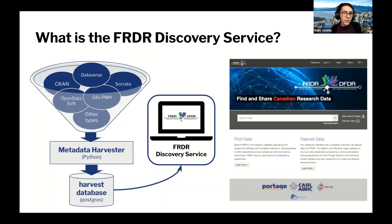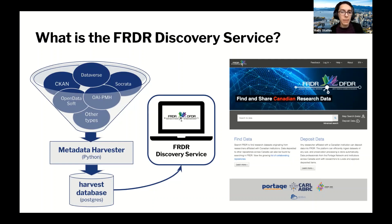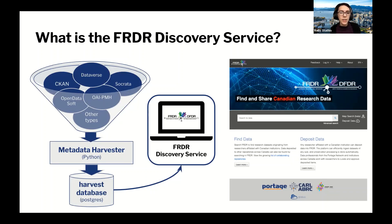FRDR has three main components: the national discovery layer, or discovery service — a federated search tool providing a single point of search for discovery and access of Canadian research data; the data repository component, accompanied by dedicated curation support; and the preservation pipeline, which connects to the data repository to provide preservation processing and long-term preservation storage. Today I'll just be focusing on the national discovery layer. The FRDR discovery service provides functionality to discover datasets that exist in Canadian research data repositories from any discipline — harvesting metadata from multiple repository platforms and exposing it via a single centralized metadata catalog.